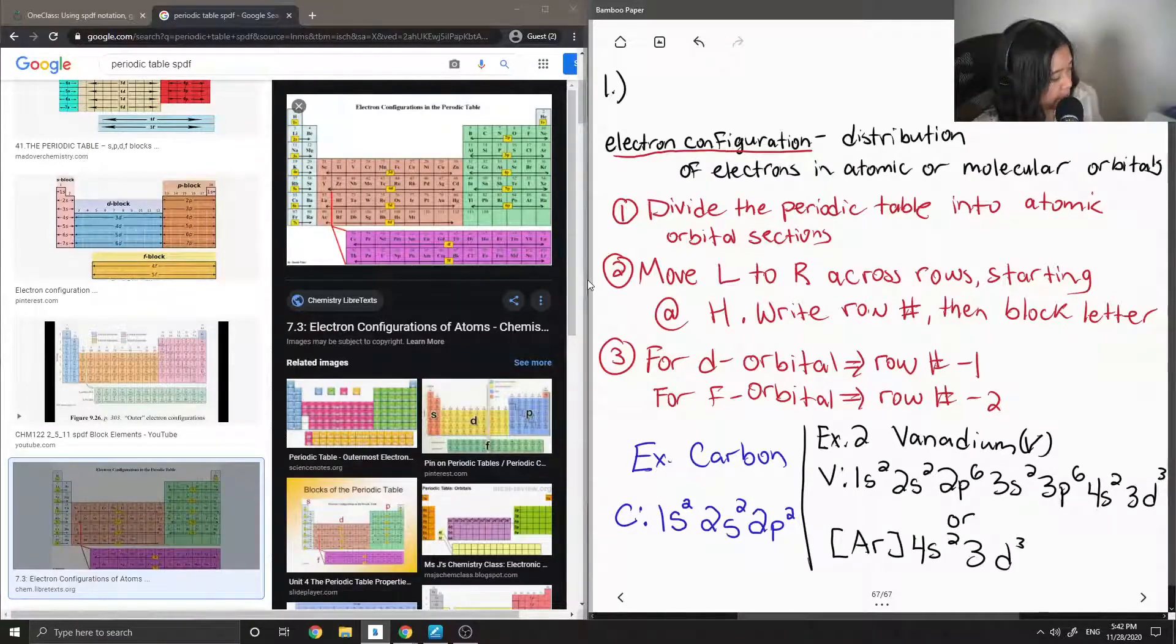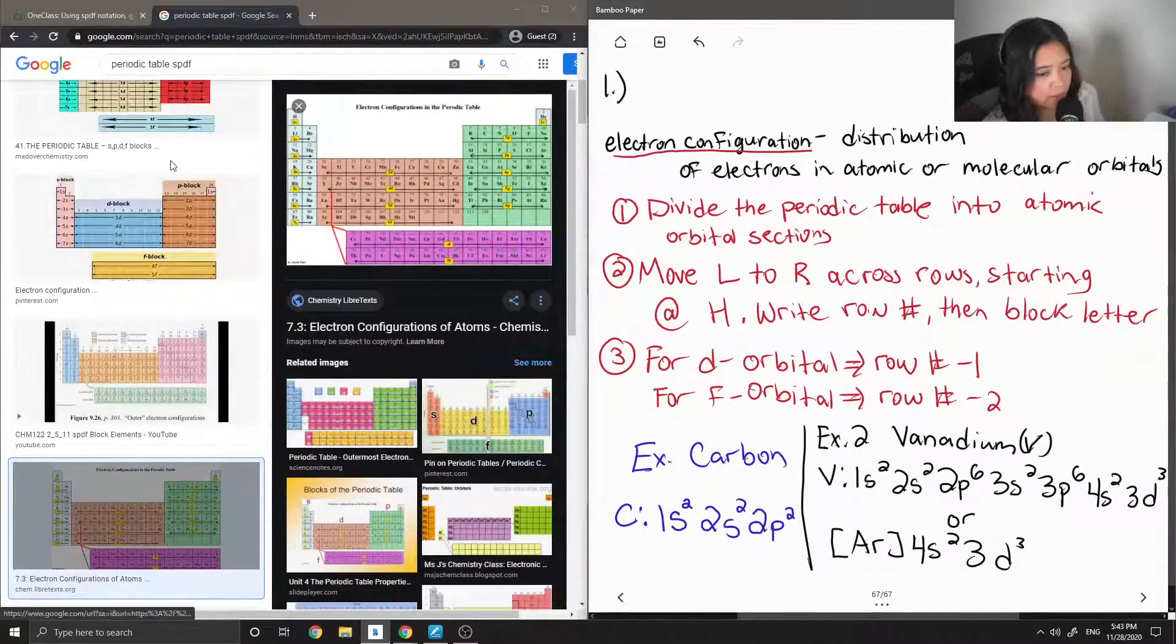So this is a faster way of writing the electron configuration without having to write all of the 1s2, 2s2 steps.